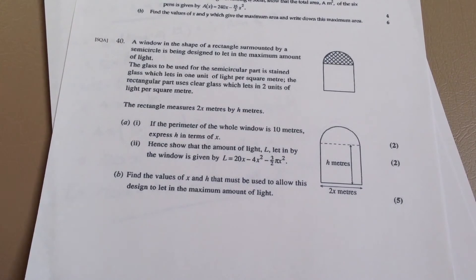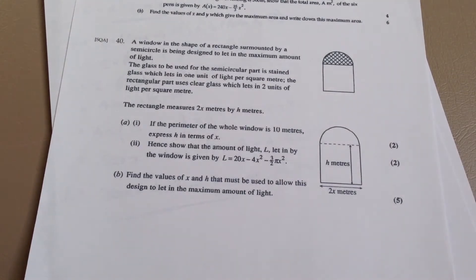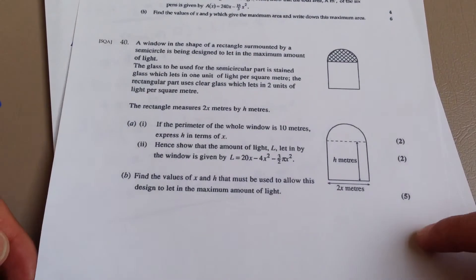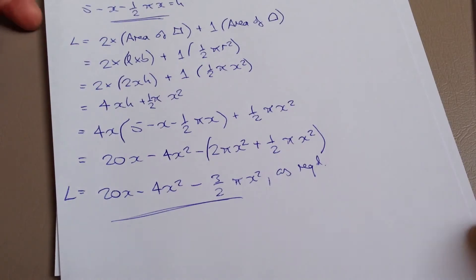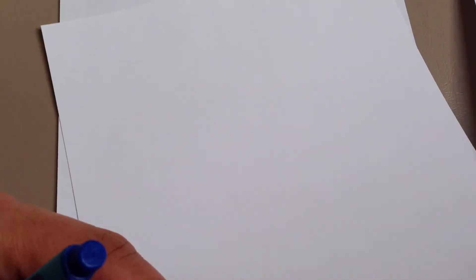Let's have a look at part b. Now part b is asking us to find the values of x and h that must be used to allow this design to let in the maximum amount of light. Once again, we are being asked to find the maximum stationary point, the maximum turning point. So we need to go ahead and differentiate. Once we've differentiated, we make it equal to zero or make the differential equal to zero and solve. So let's have a look at that. So if I move this to the side, move this to the side, get a fresh piece of paper. I'm going to start with the actual question itself or the actual equation.